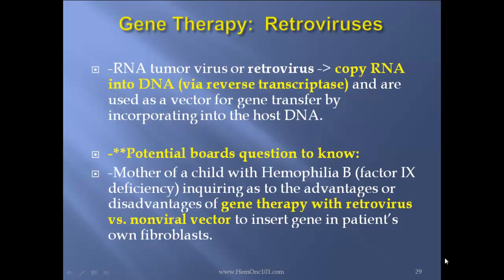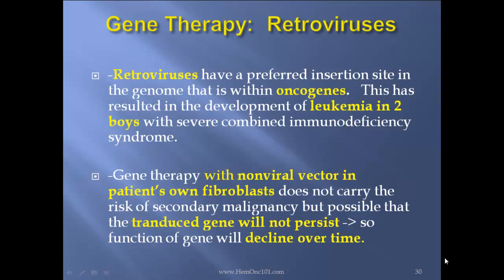Retroviruses: RNA tumor viruses or retroviruses copy RNA into DNA via reverse transcriptase and are used as a vector for gene transfer by incorporating into the host DNA. Potential board question: a mother of a child with hemophilia B inquiring about advantages or disadvantages of gene therapy with retrovirus versus non-viral vector to insert a gene in the patient's own fibroblasts. Retroviruses have a preferred insertion site within oncogenes, which has resulted in development of leukemia in patients with severe combined immune deficiency syndrome treated with retrovirus therapy. On the other hand, gene therapy with a non-viral vector in the patient's own fibroblasts does not carry the risk of secondary malignancy, but it is possible that the transduced gene will not persist, so function will decline over time.